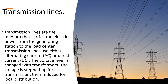Transmission lines are the medium that carries the electric power from the generating station to the load center. Transmission lines use either alternating current AC or direct current DC. The voltage level is changed with transformers — the voltage is stepped up for transmission, then reduced for local distribution.